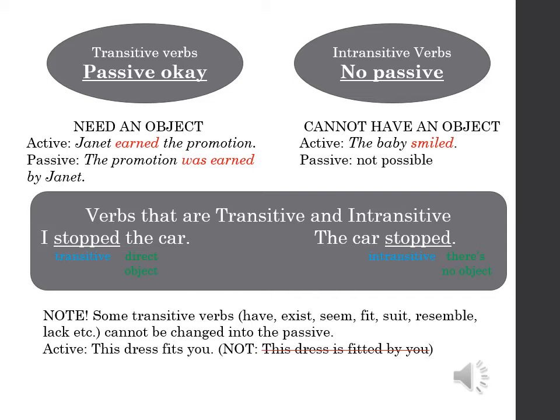Don't forget that only transitive verbs can form the passive; intransitive verbs cannot. Transitive verbs are verbs that need an object. For example, 'Janet earned the promotion' — 'the promotion' is the object, so we can change this into the passive: 'The promotion was earned by Janet.' Intransitive verbs cannot have an object. For example, 'The baby smiled' — this cannot form the passive.